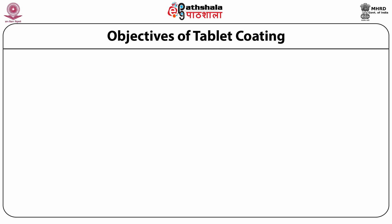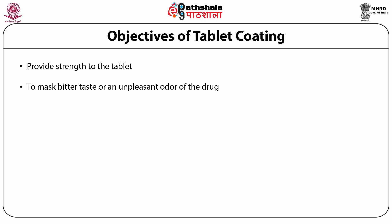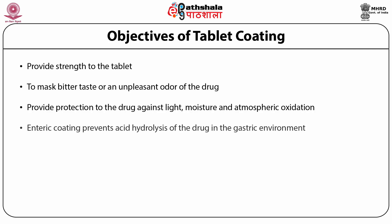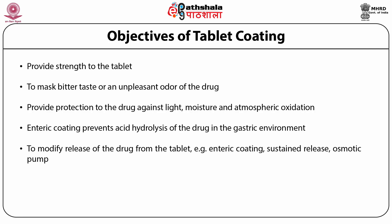The objectives of tablet coating are as follows. Coating provides strength to the tablet. Coating masks bitter taste or unpleasant odor of the drug. It also provides protection to the drug against light, moisture, and atmospheric oxidation. Coatings also have special functions, such as enteric coating, which prevents acid hydrolysis of the drug in the gastric environment.